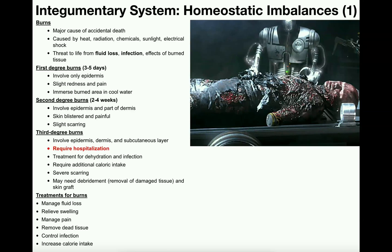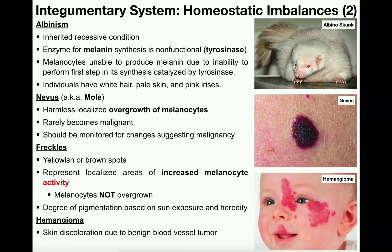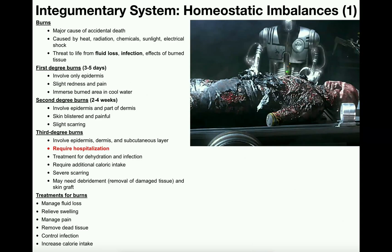We're going to see a wide range of conditions starting with this video where we'll look at burns, and then in the next video we'll see more benign things like albinism, moles, also called nevi, freckles, and so on. So here we're going to talk about burns, and there are actually three kinds: first degree, second degree, and third degree. As we go towards third degree, we get increasing severity and danger.